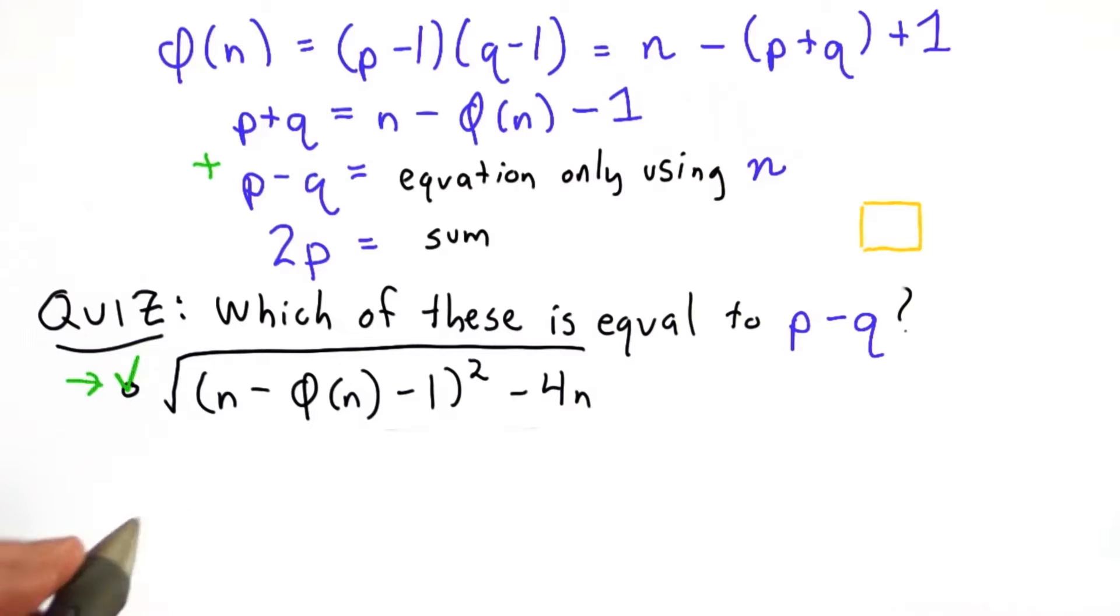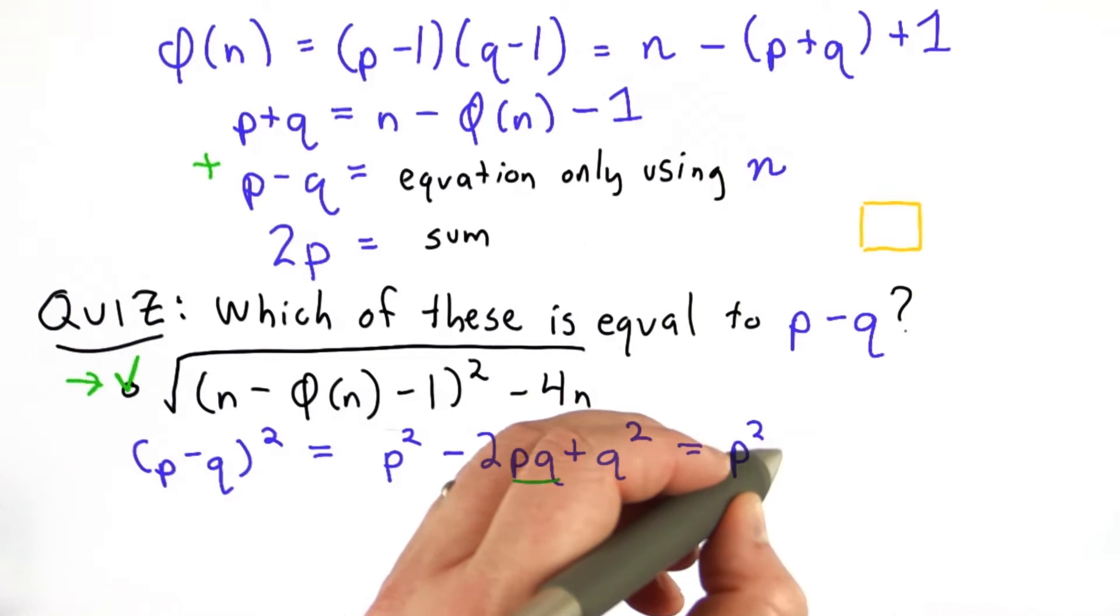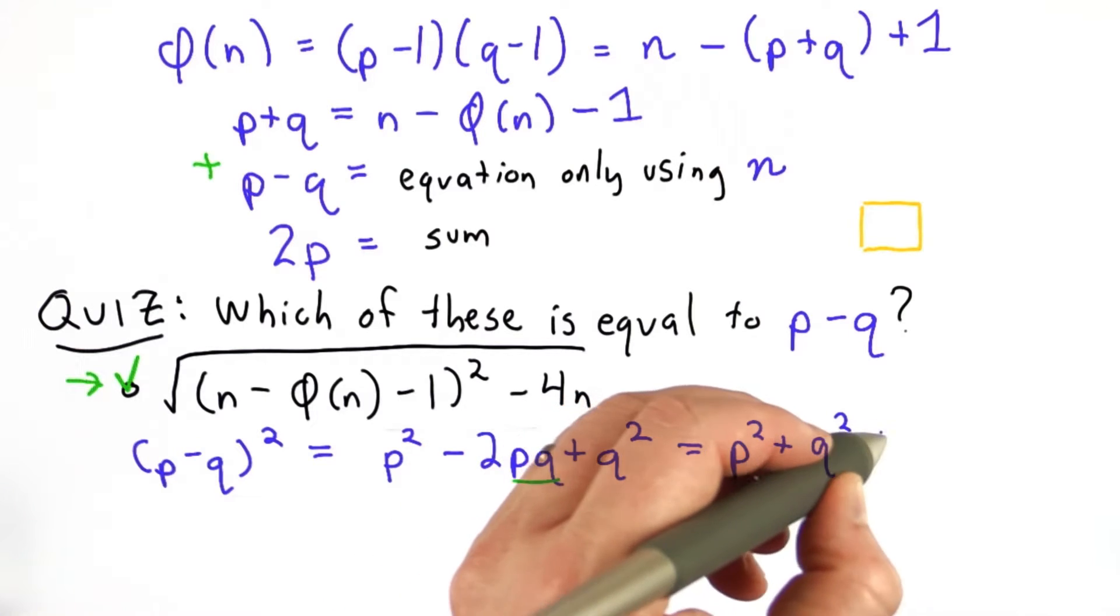So the hint was to try squaring p minus q, so we get this, and pq here is equal to n, so we can simplify this to p squared plus q squared minus 2n.